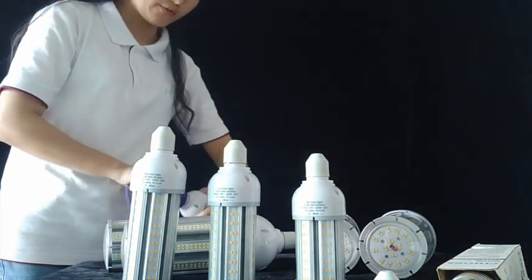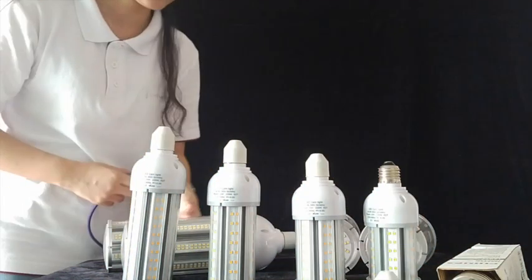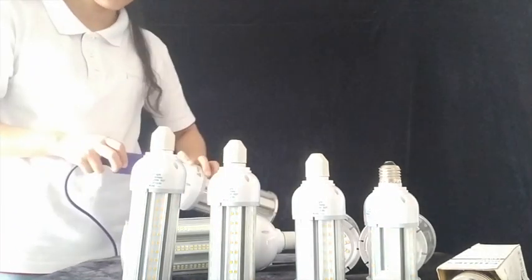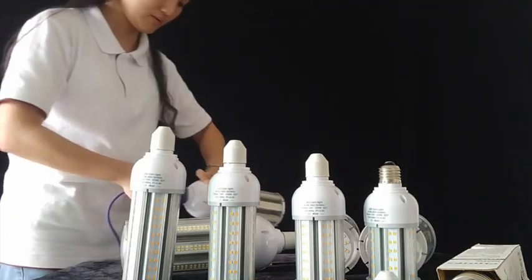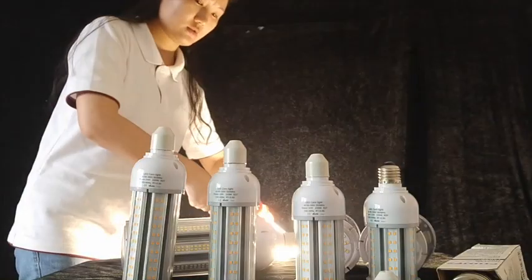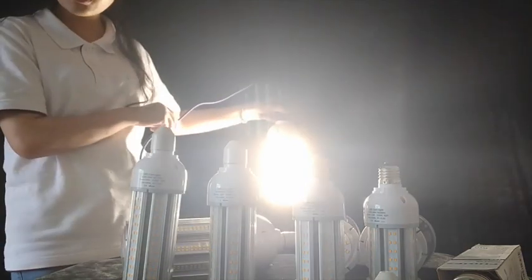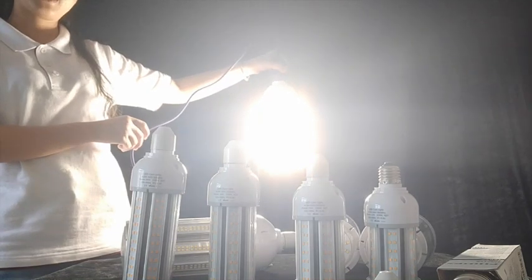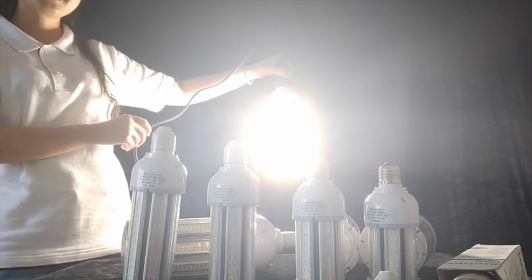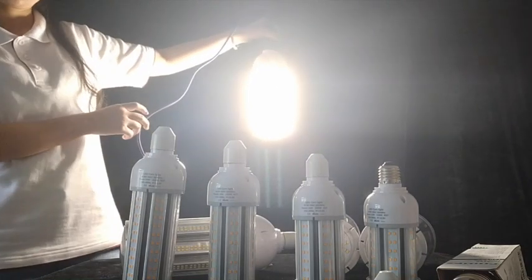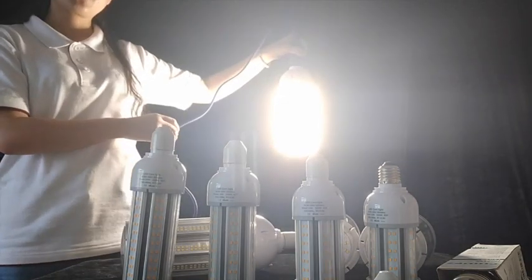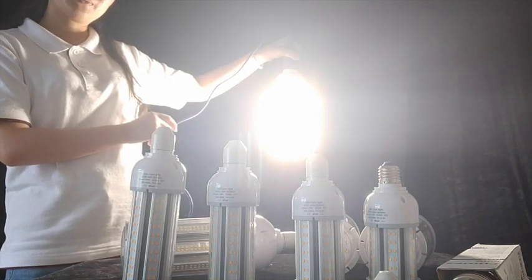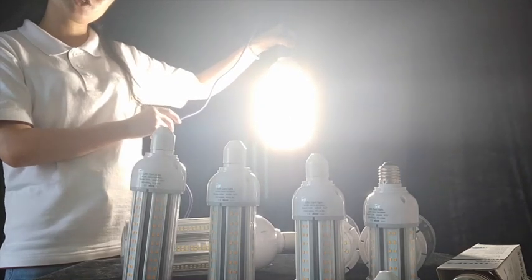Let's try 54 wattage, this is 4000 Kelvin. This is 54 wattage, the lumen can reach to 8000 lumen, and normally to replace 200 metal halide lumen, you can keep the same existing fixture and use brand new bulbs.